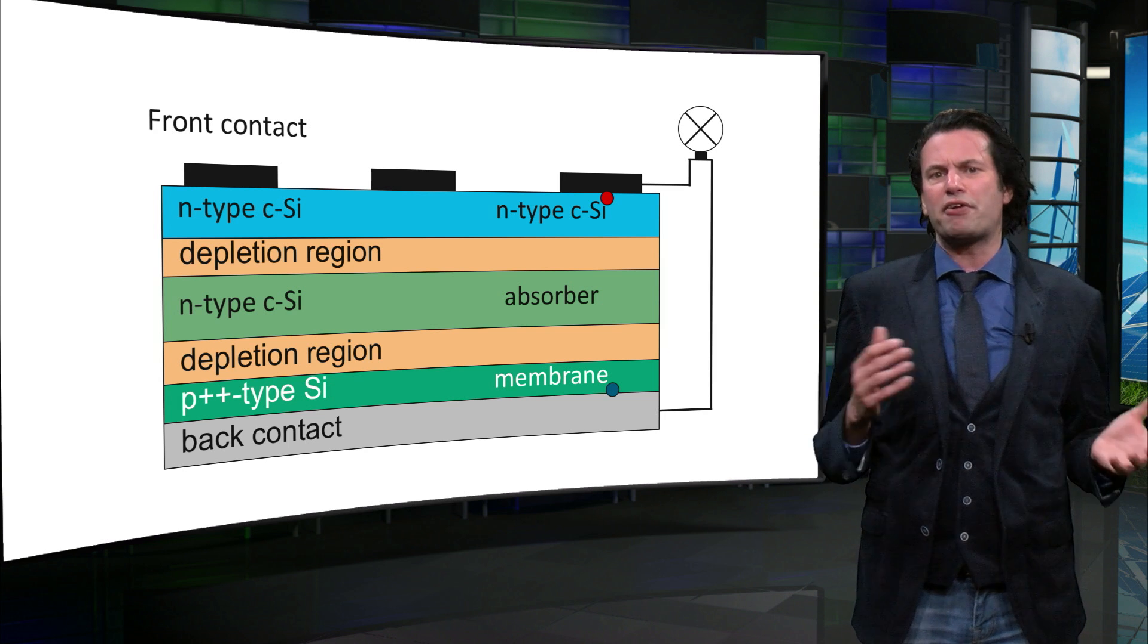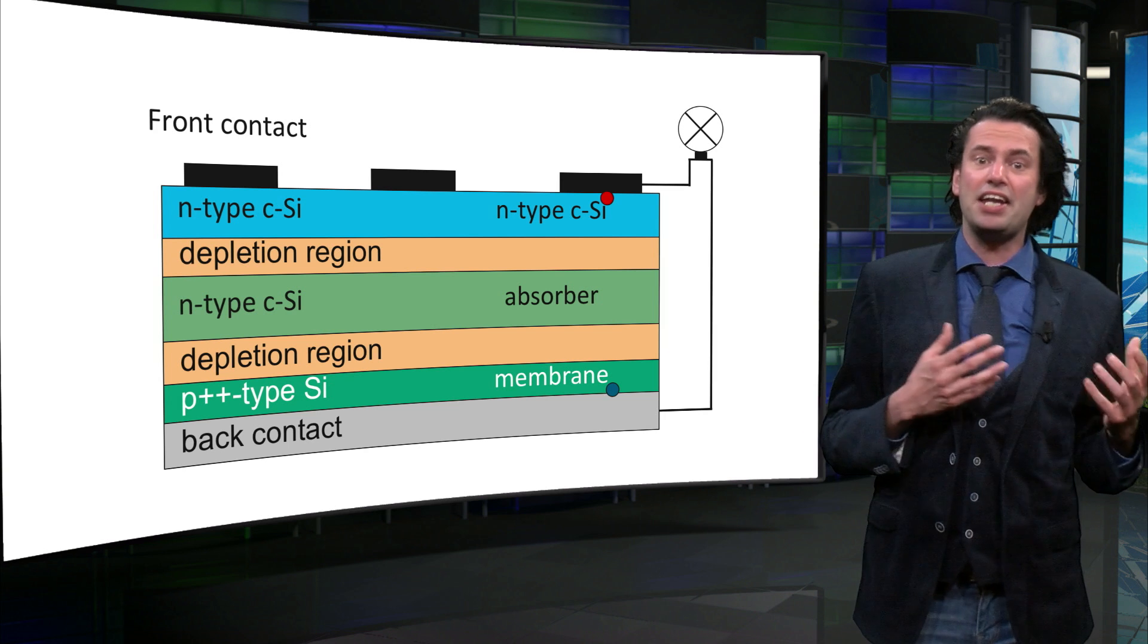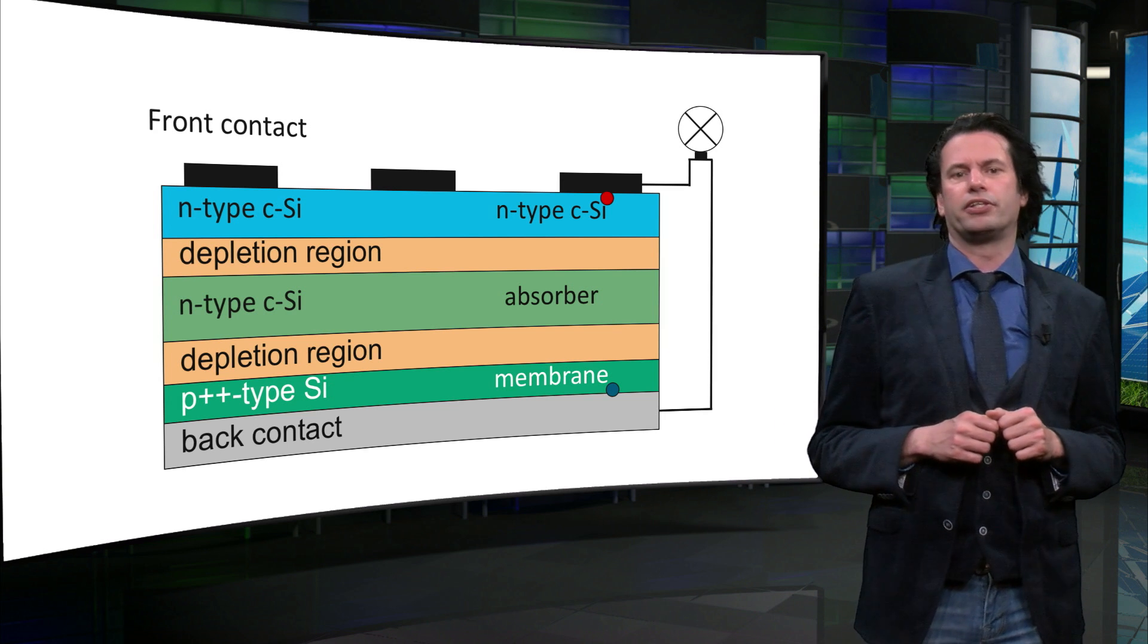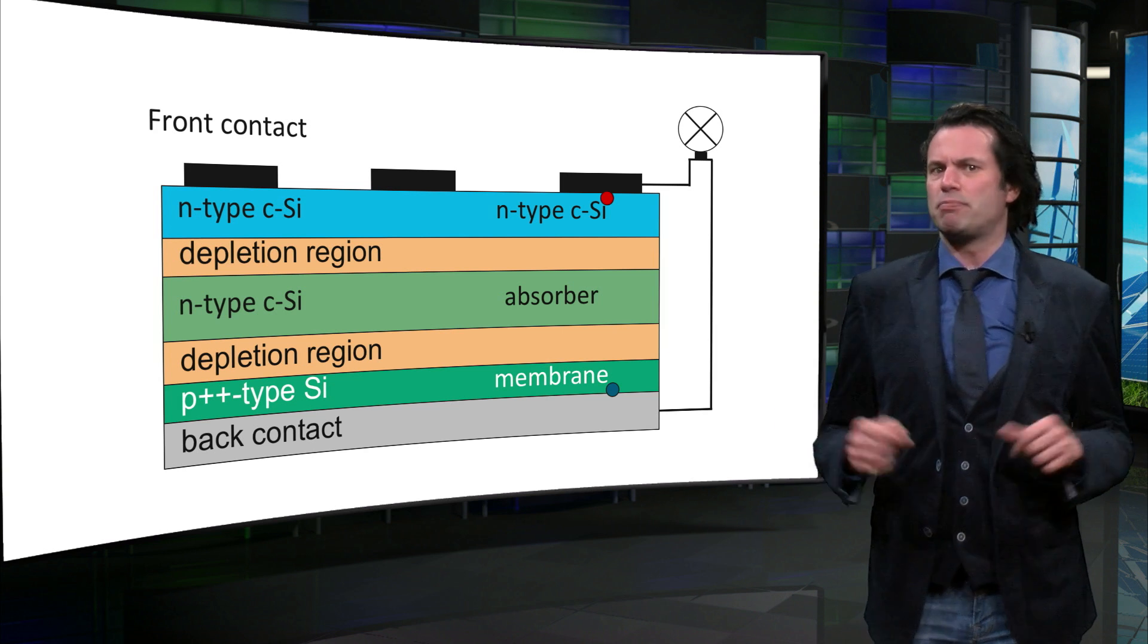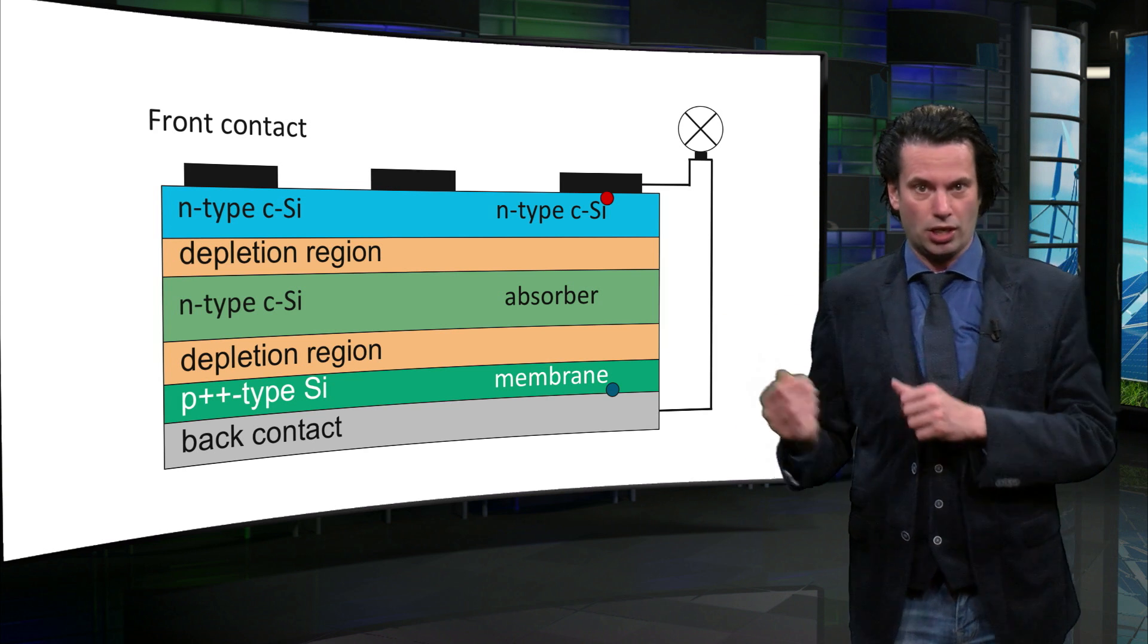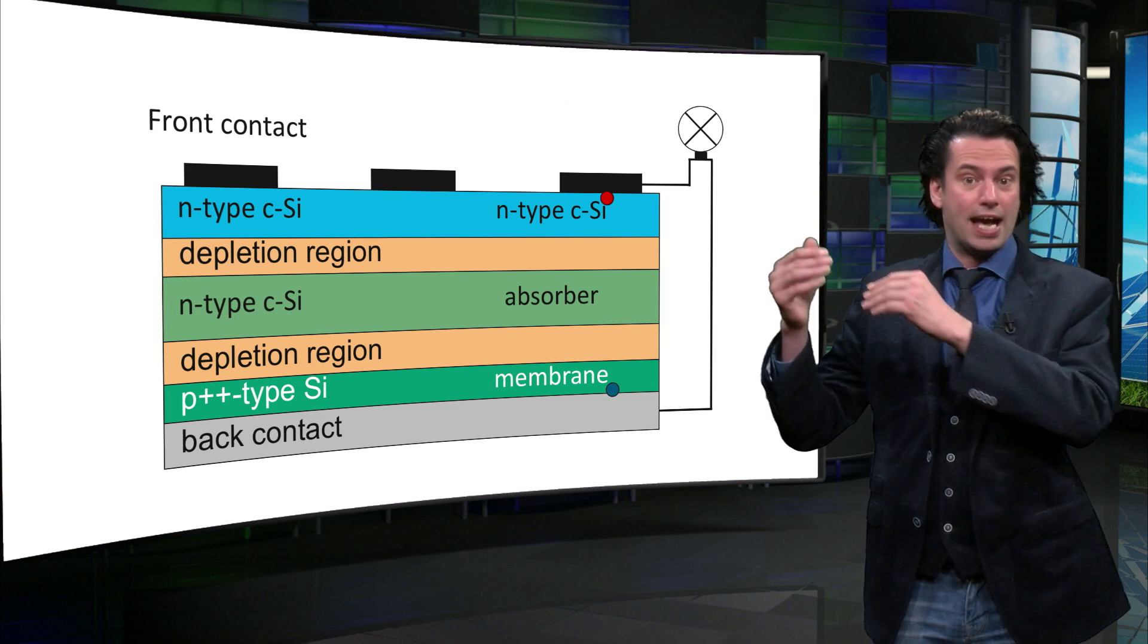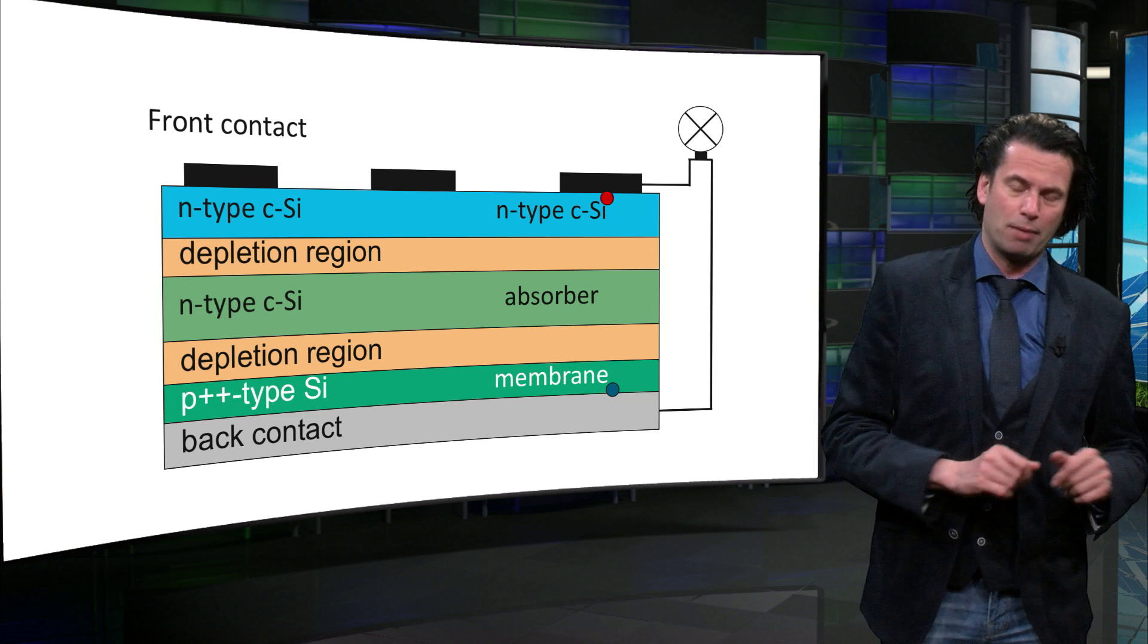Doped layers are areas where we intentionally have put impurities that make either the electron or the holes the dominant charge carriers in these regions. In N type materials, the electrons are the dominant charge carriers and in P type the holes are. Therefore, the electrons are collected at the N type layer and the holes are collected at the P type layer.